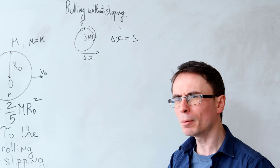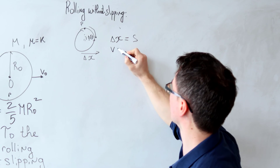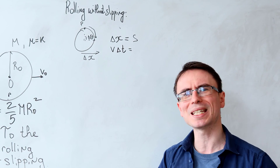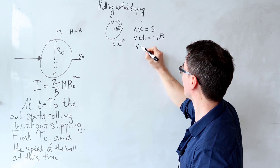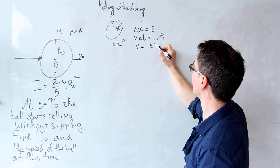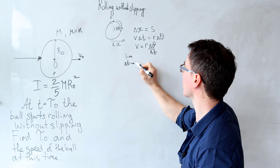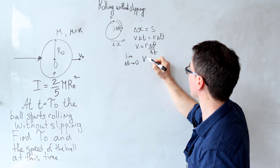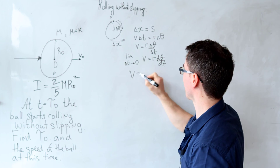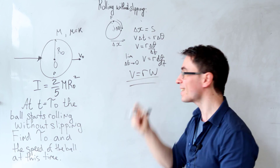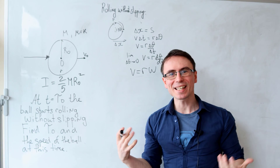Δx is given by speed times time, so v·Δt, and by the definition of an angle, s equals r·Δθ. Therefore the linear speed v equals r·Δθ/Δt, and in the limit that Δt tends to zero, v equals r·dθ/dt. We call dθ/dt the angular speed ω, so v = rω. This is the equation commonly taught, but it only applies when rolling without slipping.